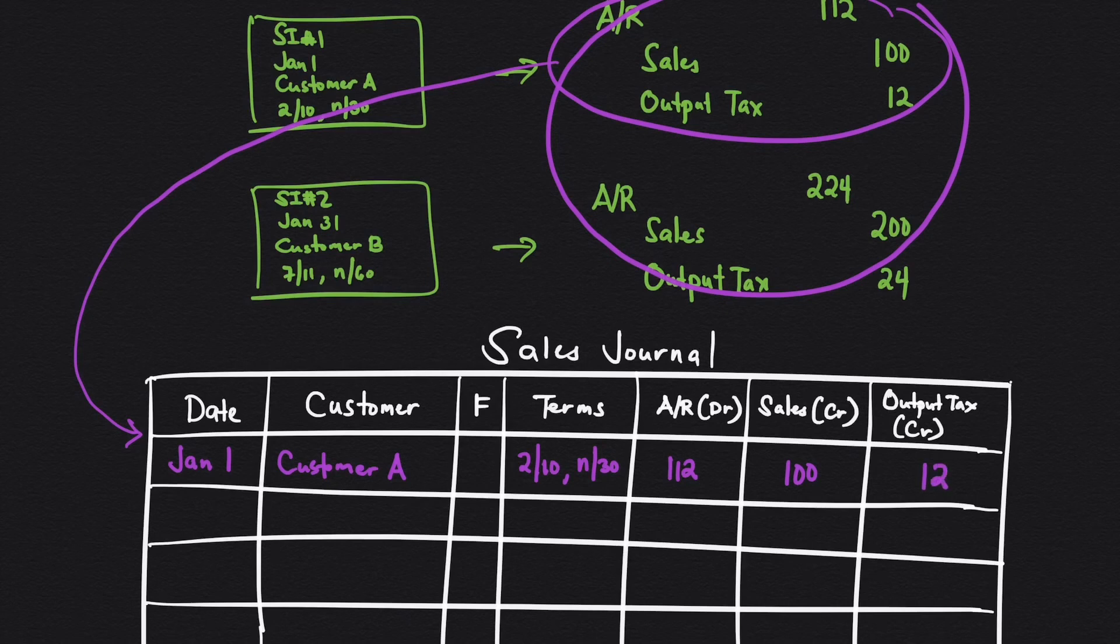So instead of using three lines in the sales journal, you're only using one line. Recording-wise, this is easier because you will not be thinking of debits and credits.